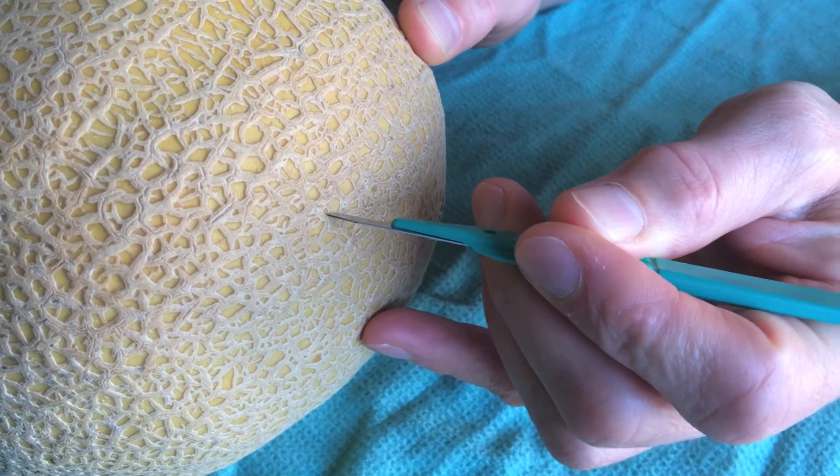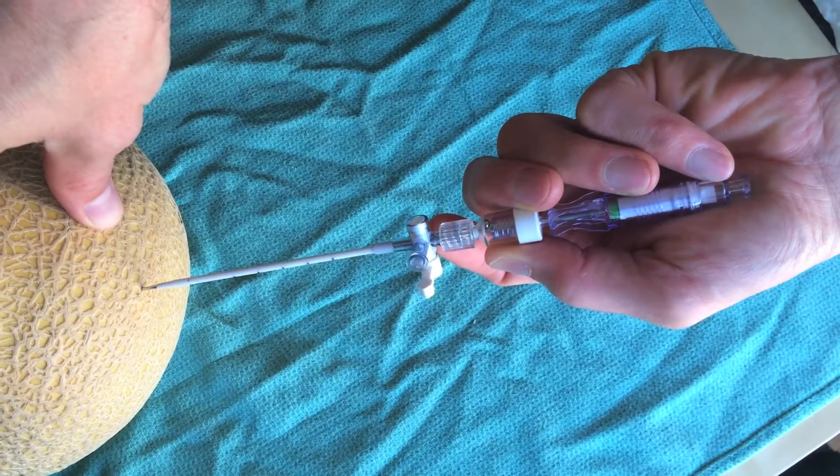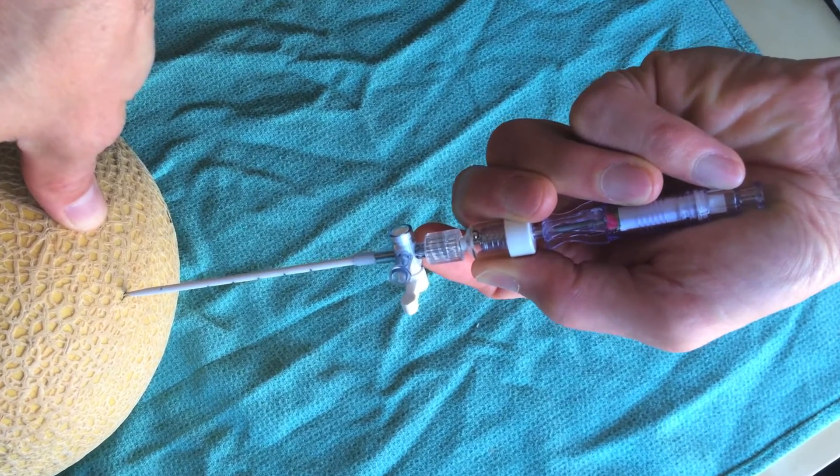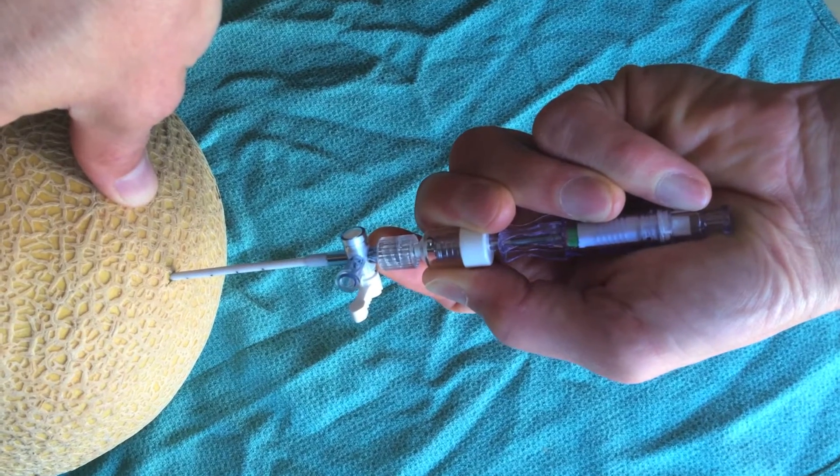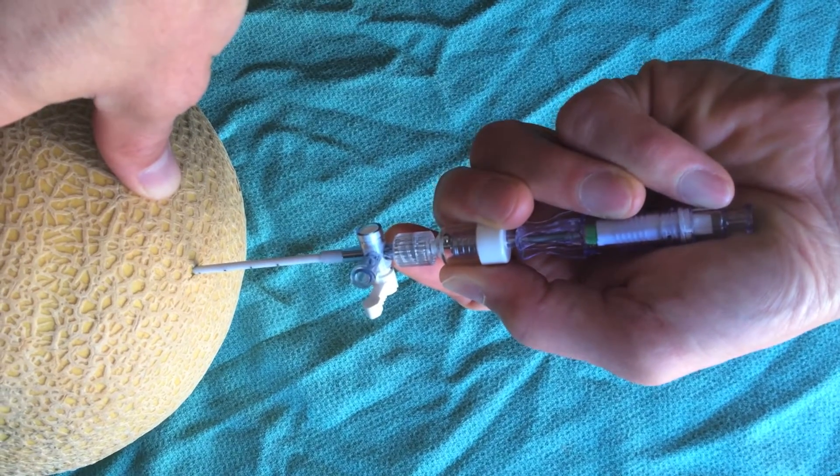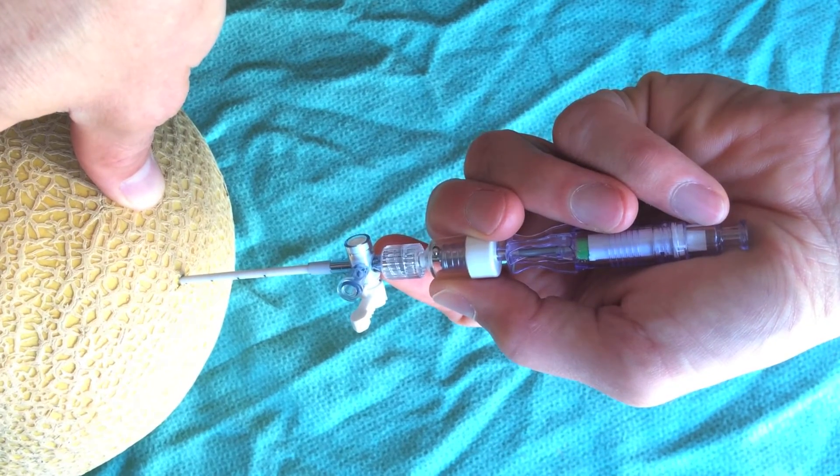Use a scalpel to make a tiny skin incision. Advance the Turcal needle through the small skin incision. The blunt tip will retract as you're passing through skin and subcutaneous tissue and it will extend once you reach the low resistance of the peritoneal cavity.